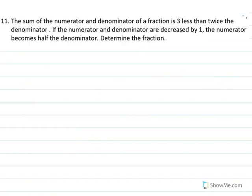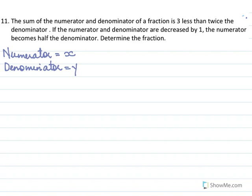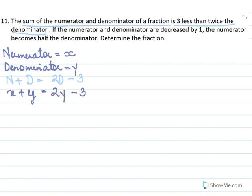The next sum: let numerator equal x and denominator equal y. The sum of numerator and denominator is 3 less than twice the denominator: x plus y equal to 2y minus 3. Rearranging: x minus y equal to minus 3. This is equation 1.